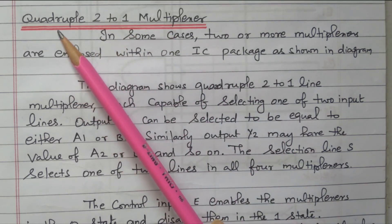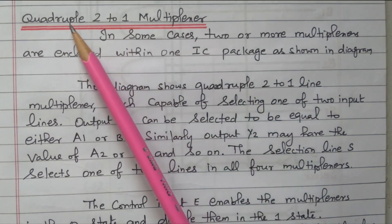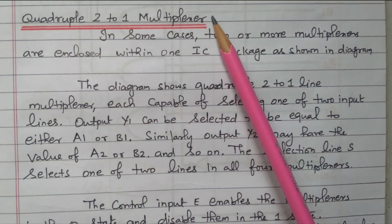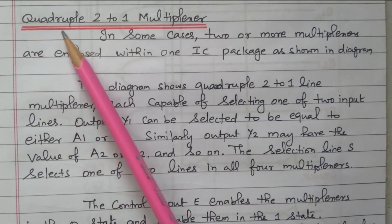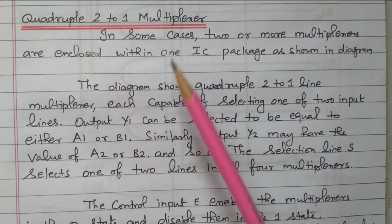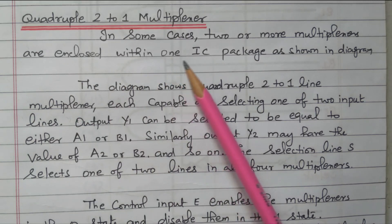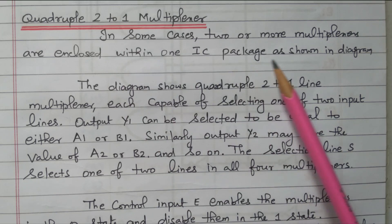Quadruple means 4-bit data. 2-to-1 means two sets of 4-bit data are available, and one set of data will be produced at the output. That is the function of the quadruple 2-to-1 multiplexer — out of two sets, one set is produced at the output based on the selection line. In some cases, two or more multiplexers are enclosed within one IC package, so within a single IC there are two sets of multiplexers.